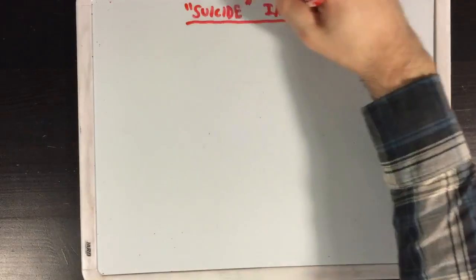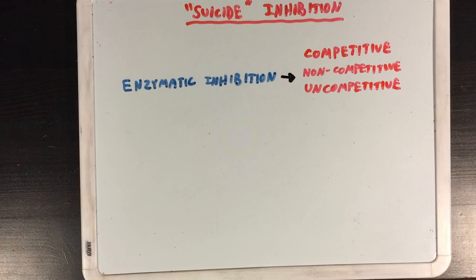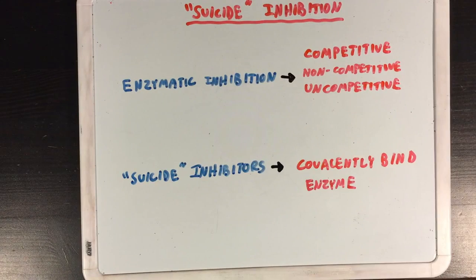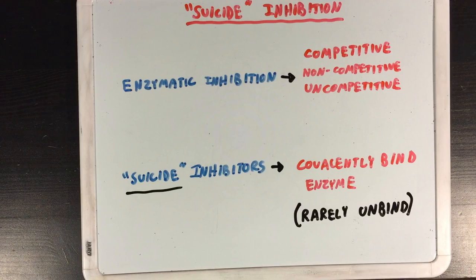The last example of covalently modified enzymes I want to discuss is suicide inhibition. When we think of enzymatic inhibition, we usually think of competitive, non-competitive, and uncompetitive inhibitors, which follow certain patterns in terms of their effects on enzyme kinetics. But there's another type — the suicide inhibitor. Suicide inhibitors covalently bind the enzyme and prevent it from catalyzing reactions. Since these inhibitors form covalent linkages to the proteins, they rarely unbind, which is why we call them suicide inhibitors — since after they bind, that's it for them. This is what distinguishes this type of inhibitor from the other three.